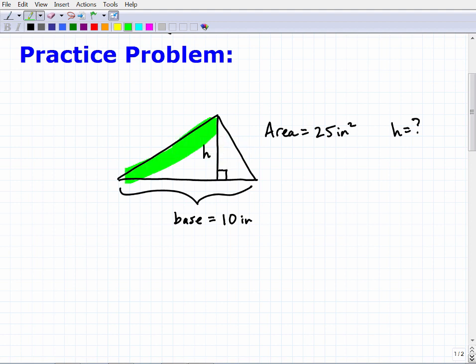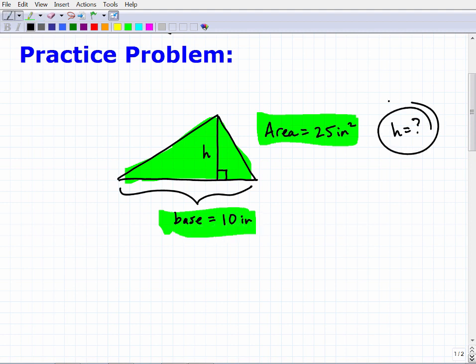So we have a triangle here, and we have some information about this triangle. Here's the area, and we also know the base. So what I'm looking for is the height. What is the height of this triangle given this information? If you think you could solve this, you might want to pause the video and give it a whirl.